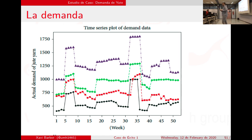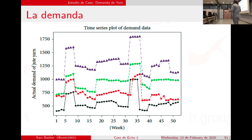¿Qué ventaja tiene dibujarlo así? Que podemos ver de verdad cómo fluctúa de un año a otro. Si tenemos 20 años el gráfico no dice nada, pero con 5 años sí vemos cosas. Aquí tenemos 4 años: el año lila ha sido mejor, pero el patrón más o menos se ha comportado de forma similar. Hay un salto y una bajada que en el año rojo fue menor, en el verde mucho menor, pero el negro y el lila muestran que ha aumentado sin cambiar el comportamiento general.